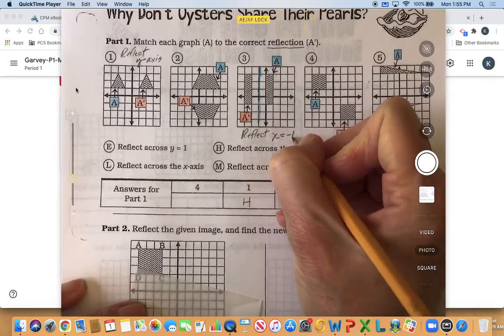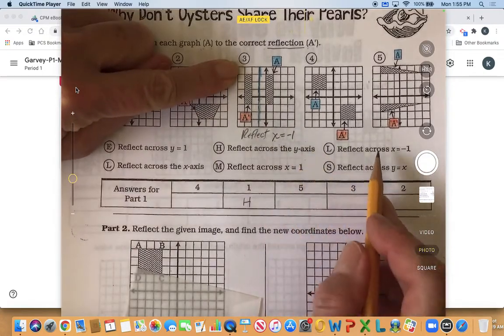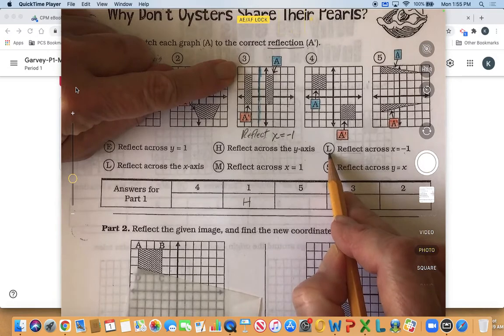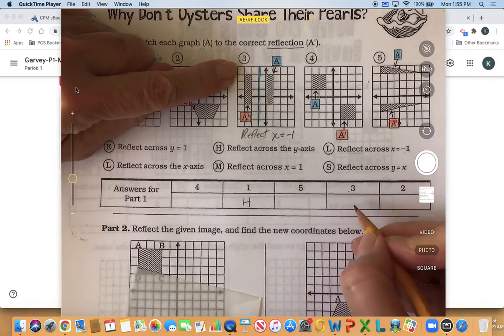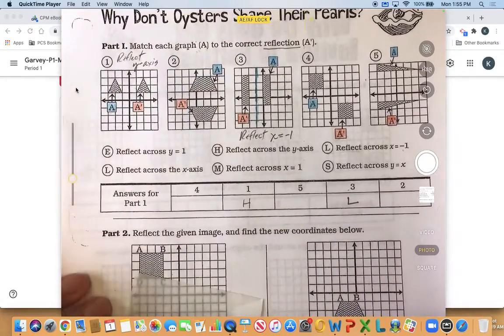X is equal to negative one. Okay so for number three it's x is equal to negative one which is right here, so that's L, so I can go and find three and I'll put L there.